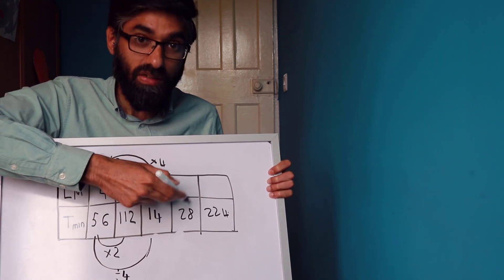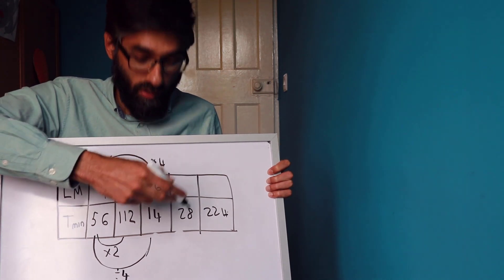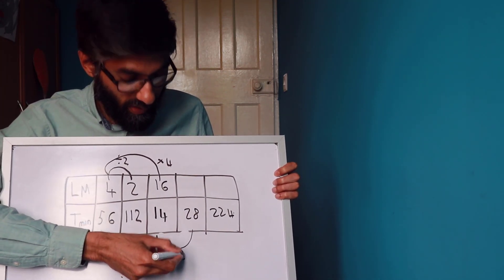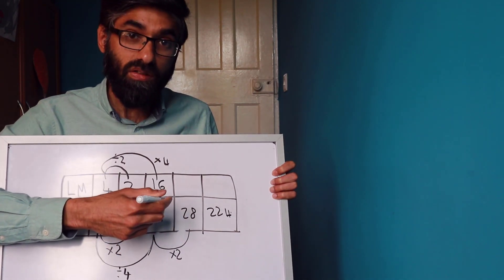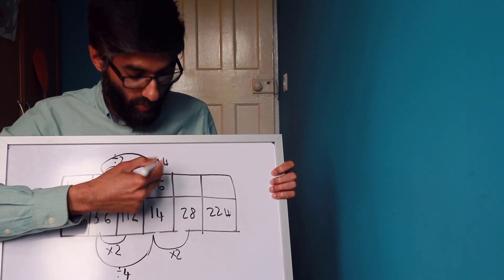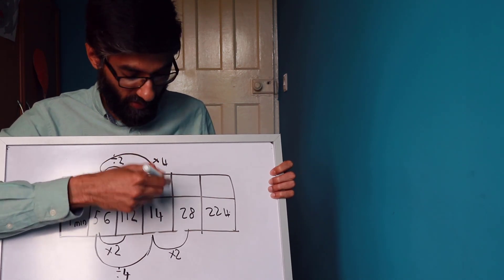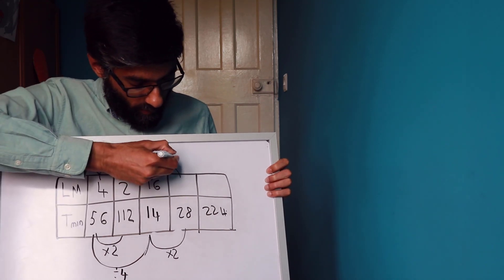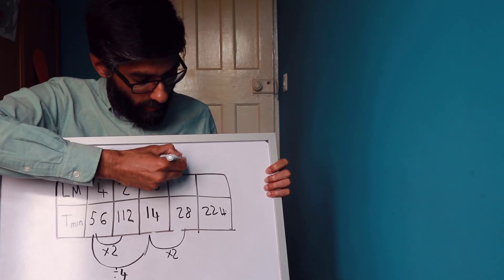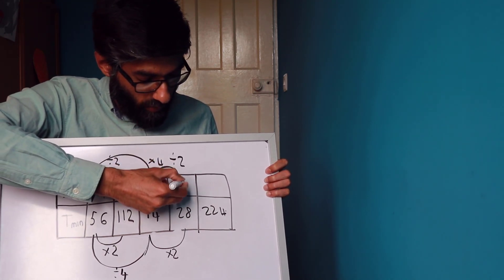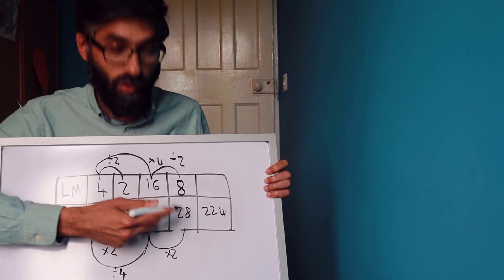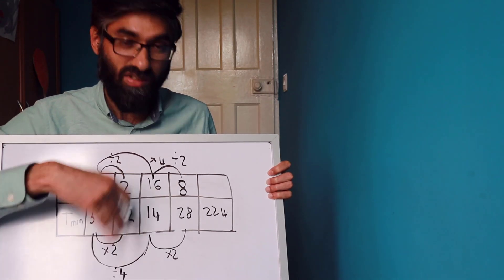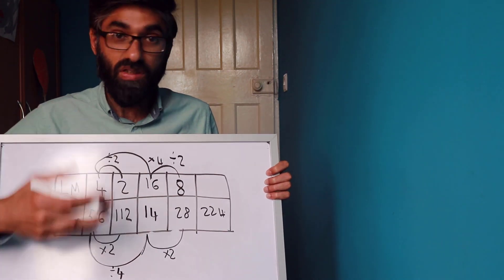We have 28 minutes and need to find the number of lawnmowers. The time is doubling from 14 to 28, so we do the opposite for lawnmowers and divide by two: 16 divided by 2 is 8 lawnmowers. More time means fewer lawnmowers — that's the inverse proportion relationship.